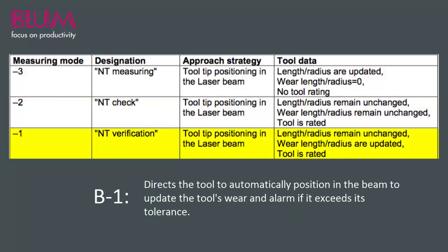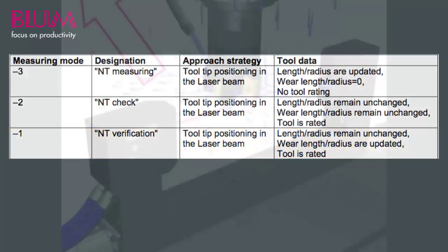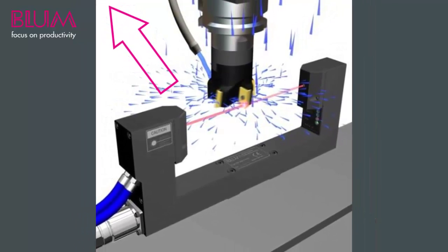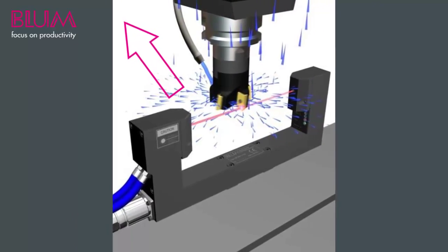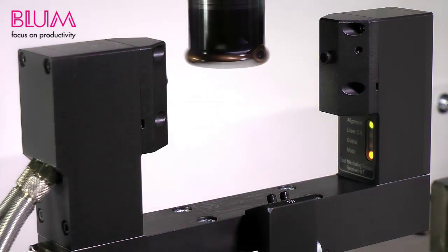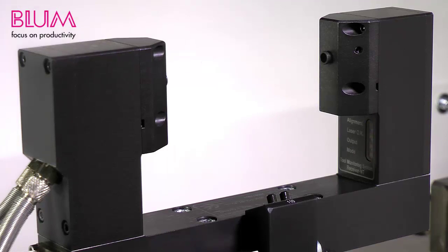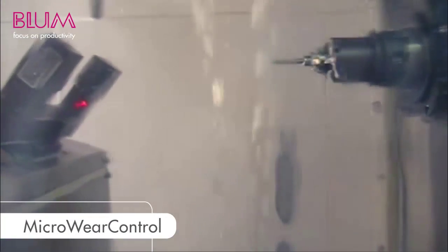And lastly, B negative 1 will automatically position the tip of the tool into the beam, but this time update the tool's wear and only alarm if it surpasses its set tolerance. It is important to note that these modes use an unconventional tool approach methodology. Rather than looking to trigger a skip signal by pushing the tool into the laser beam, the tool will wrap into position and then slowly retract, looking for the first trickle of light. The system is actually looking for a beam reconnection type of skip signal, which avoids errors that arise from coolant and swarf passing through the beam during measurement.